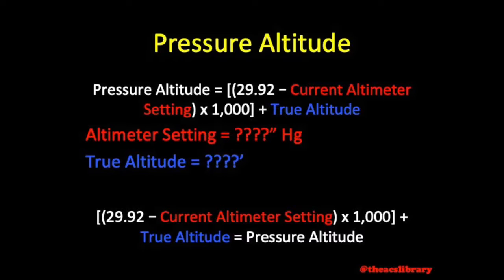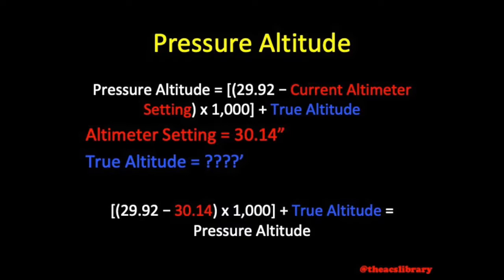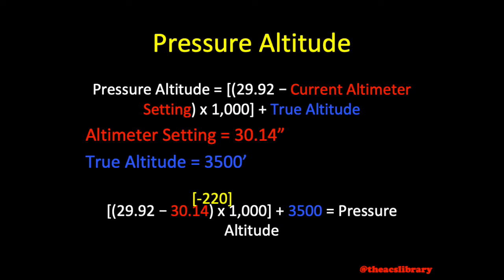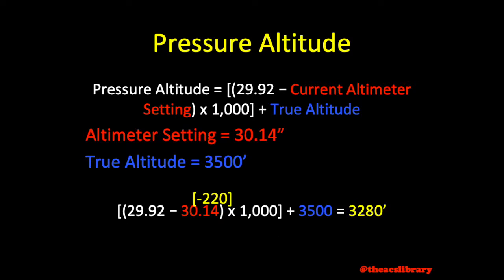To find pressure altitude for cruise data in the same area, assuming we have the same altimeter setting, we would simply add that value of negative 220 to our desired cruise altitude rather than the airport elevation. If we are planning to fly over the airport at 3,500 feet MSL, we can calculate our cruise data based on a pressure altitude of negative 220 plus 3,500, or 3,280 feet pressure altitude.